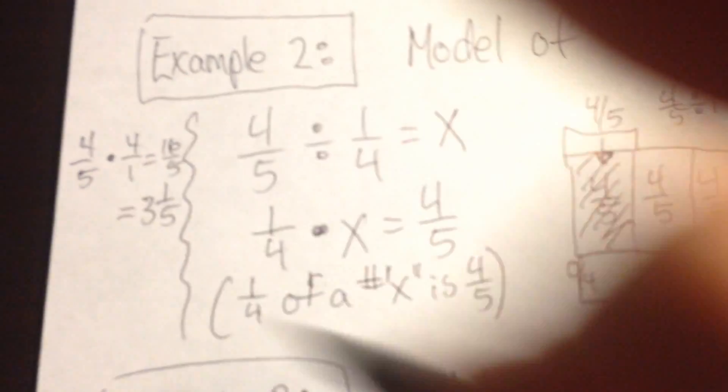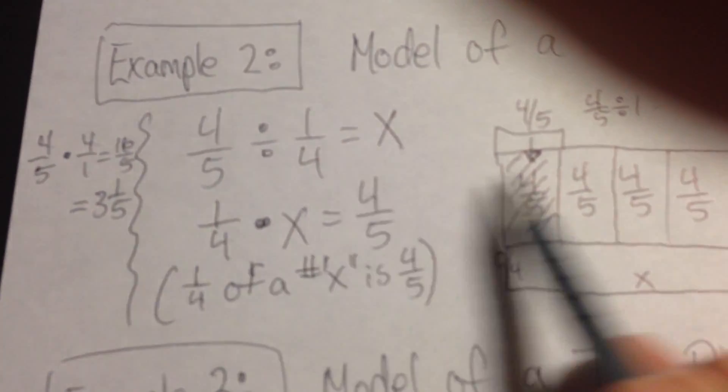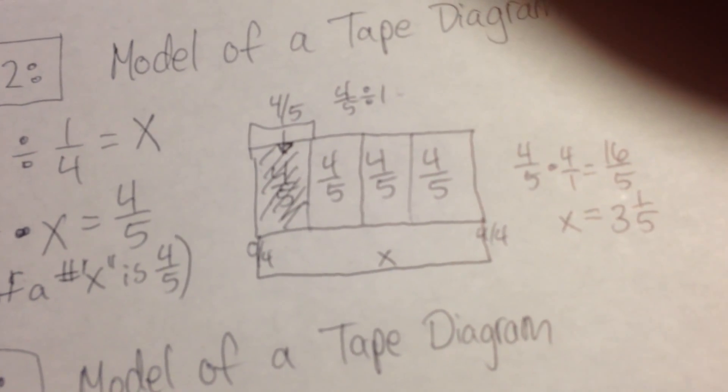If I put that in simplest form, I have three and one-fifth. So my calculation using a reciprocal matches what my tape diagram came up with. Thanks.